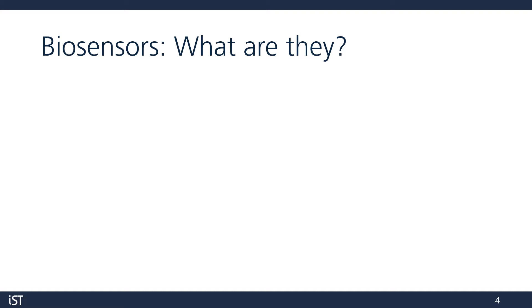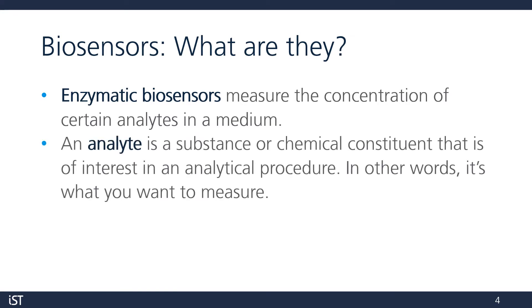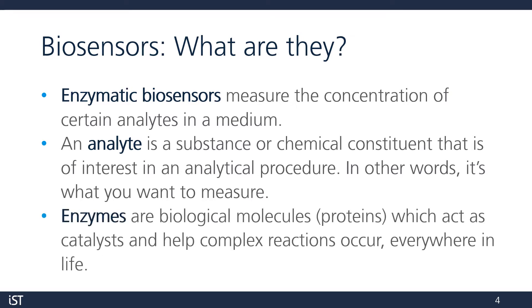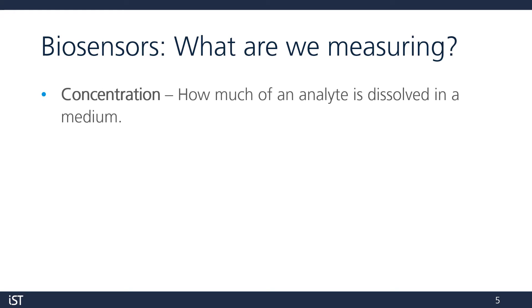So, biosensors — what are they? Let's define a few terms. Enzymatic biosensors measure the concentration of certain analytes in a medium. An analyte is a substance or chemical constituent that is of interest during an analytical procedure — simply put, it's what you want to measure. Enzymes are biological molecules which act as catalysts and help complex and specific reactions occur everywhere in life. So, what are we measuring when we're using a biosensor? We're measuring the concentration of our target analyte — that is, how much of an analyte is dissolved in our medium.